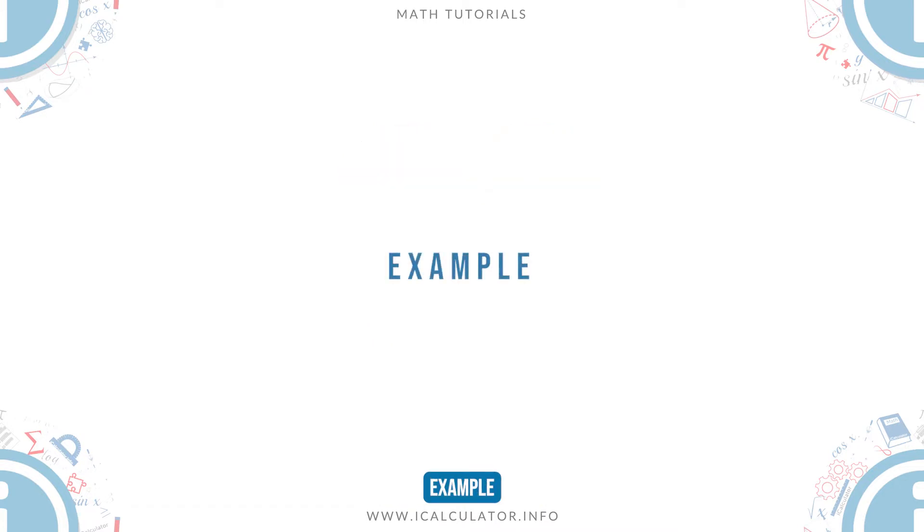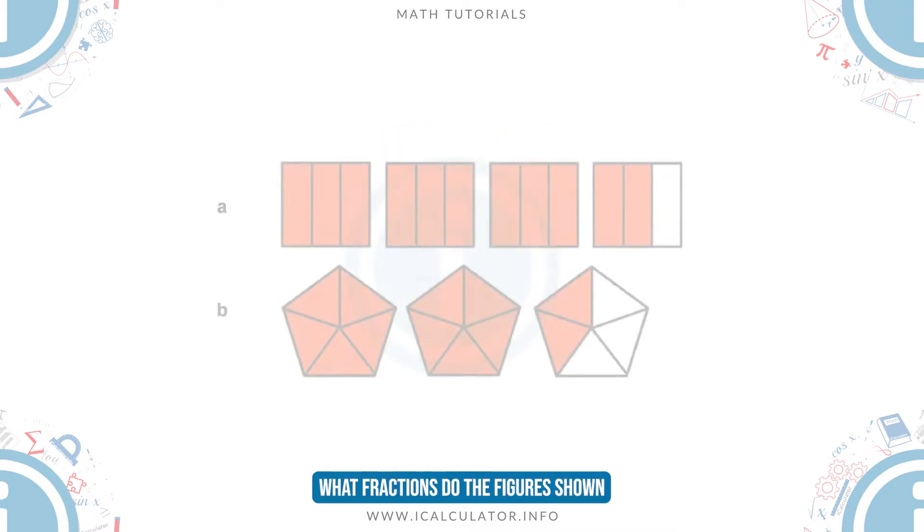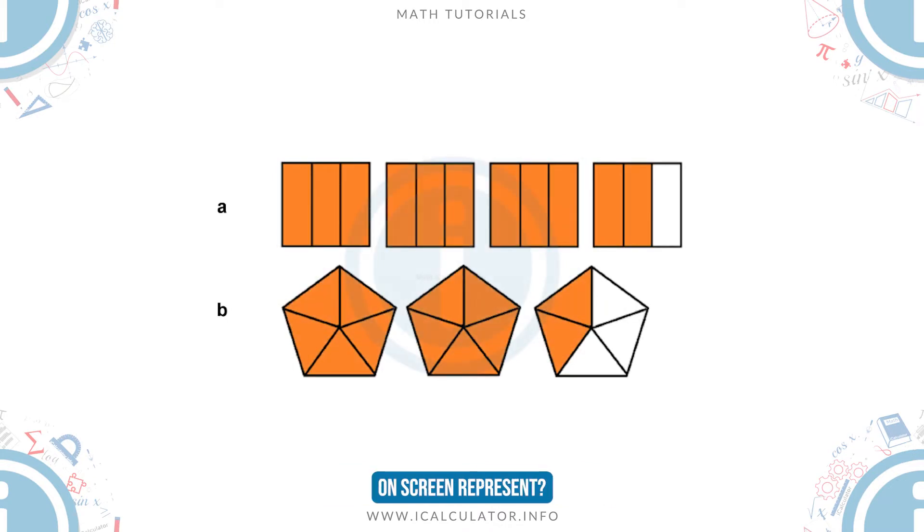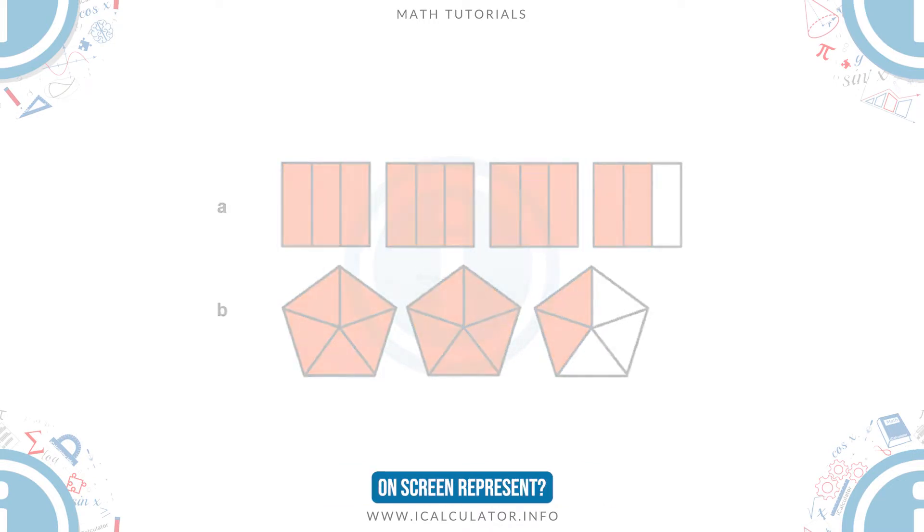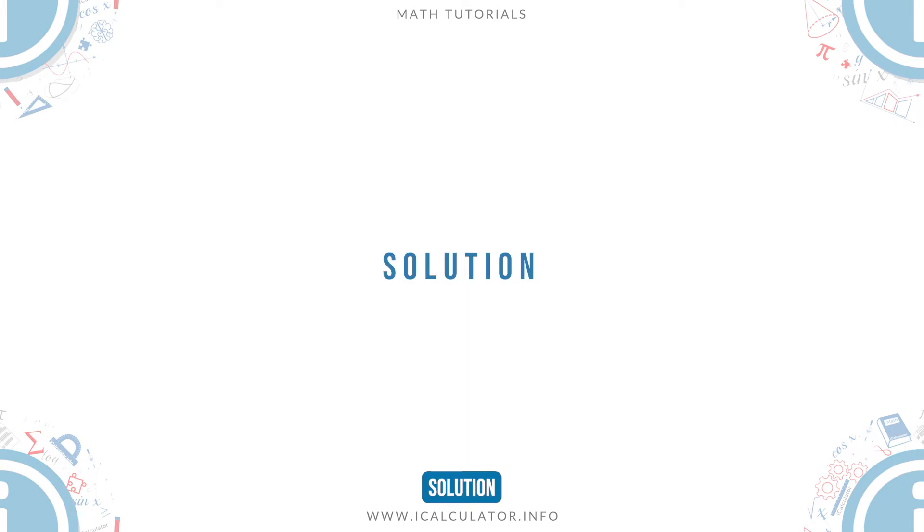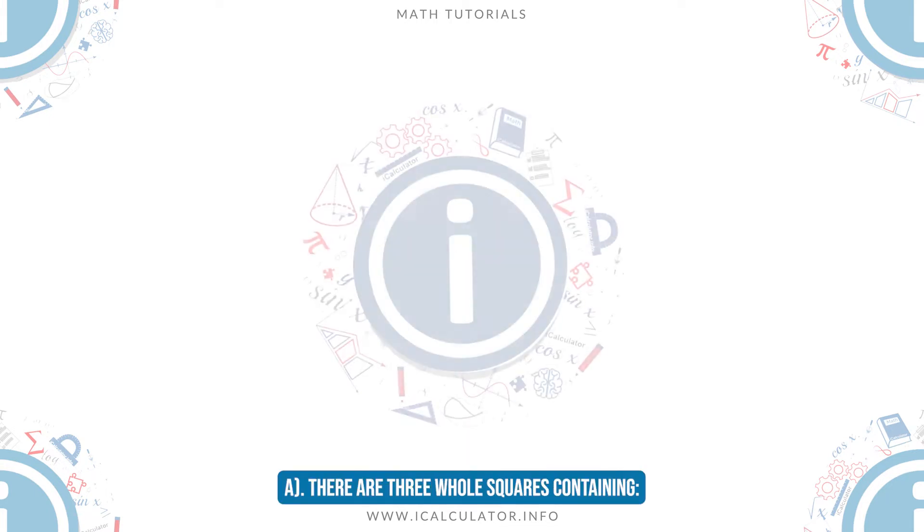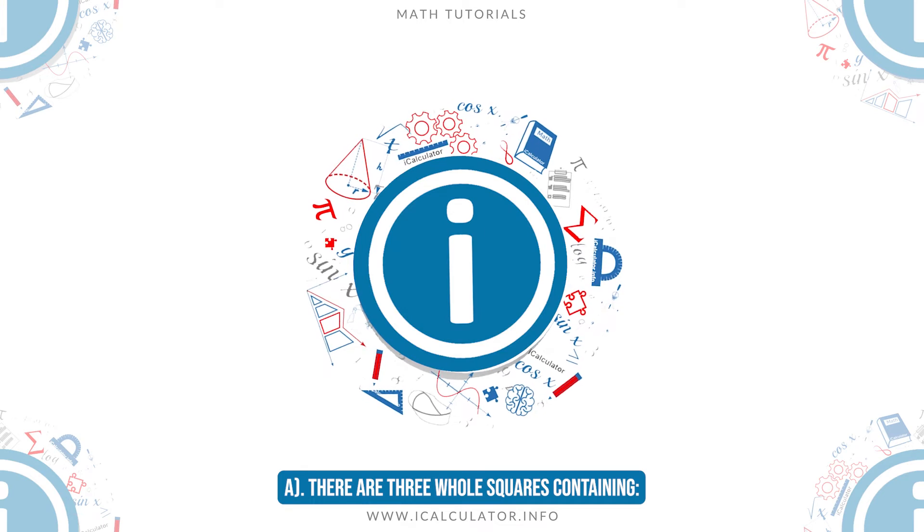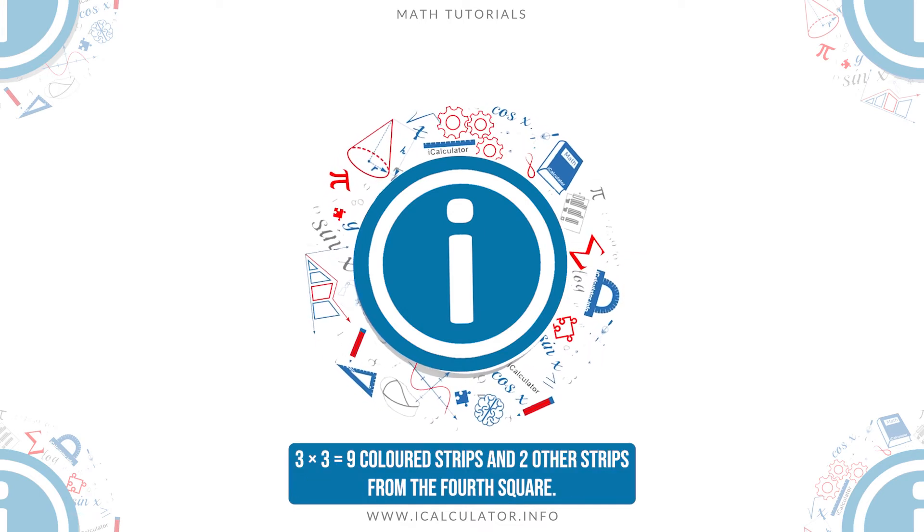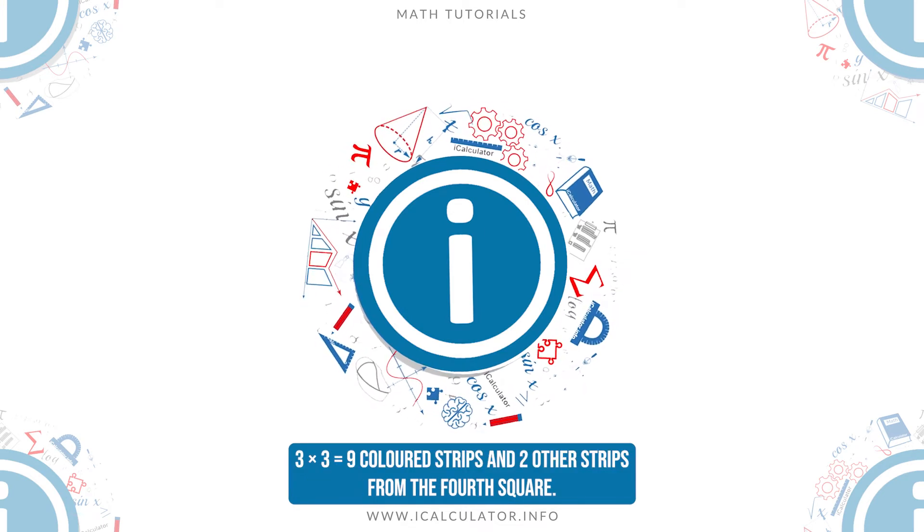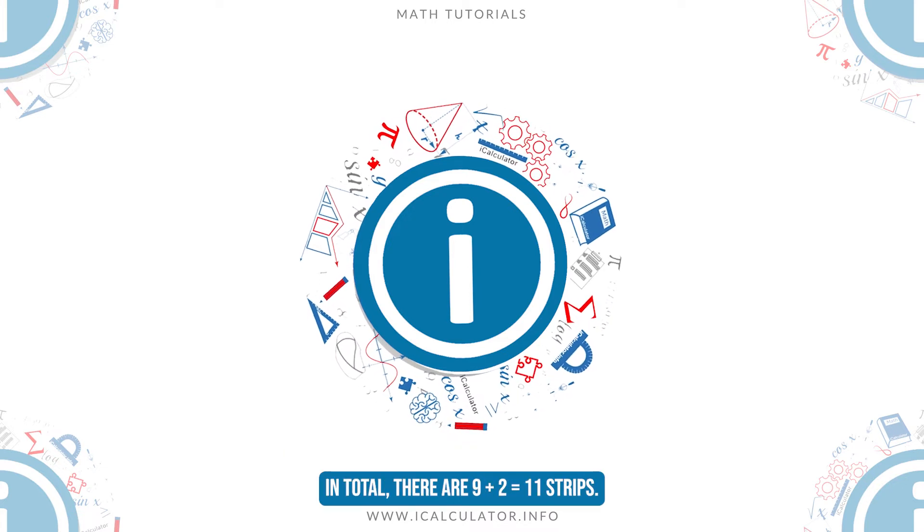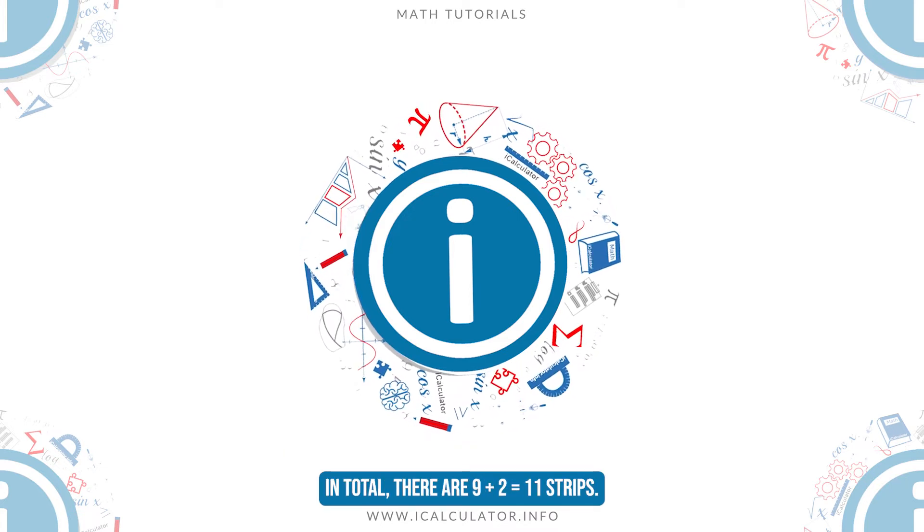For example, what fractions do the figures shown on screen represent? Solution. A. There are three whole squares containing 3 times 3 equals 9 colored strips and two other strips from the fourth square. In total, there are 9 plus 2 equals 11 strips.